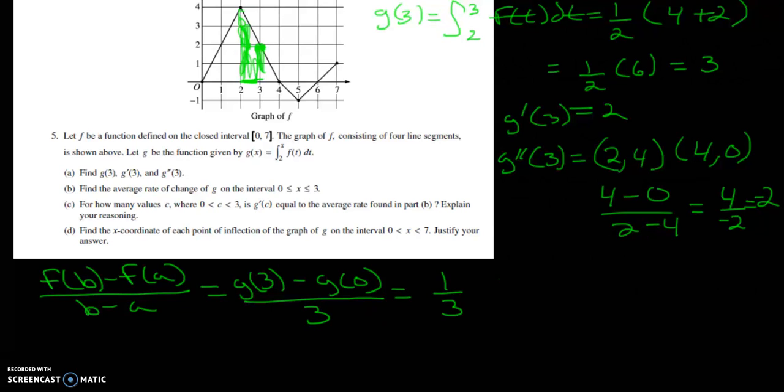So g of 3 is 2, g of 0 is 0. That's how you get 1 third. So now you're going to get the integral from 0 to 3 f of t dt.